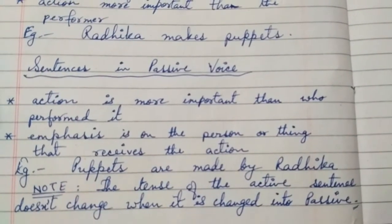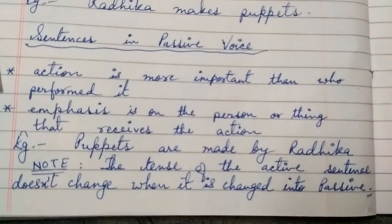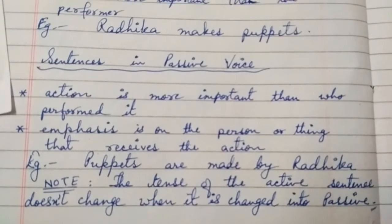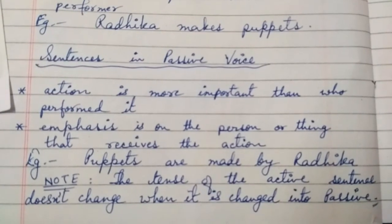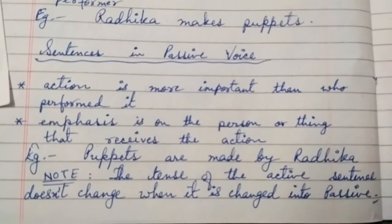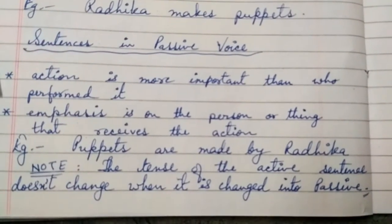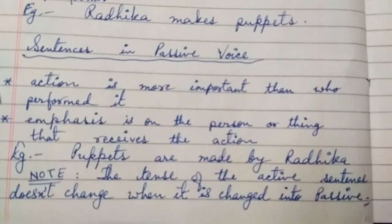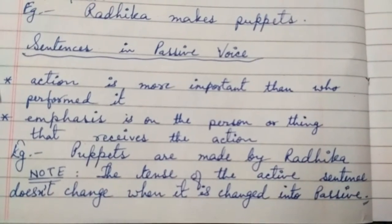Another use of passive voice is when the emphasis is on the person or thing that receives the action — the person who is receiving is more important. For example, 'The ball was passed to Mohan' — who passed the ball is not important to be known; what matters is that the ball was passed to Mohan. Emphasis is on the person or thing that receives the action. For example: 'Puppets are made by Radhika.'